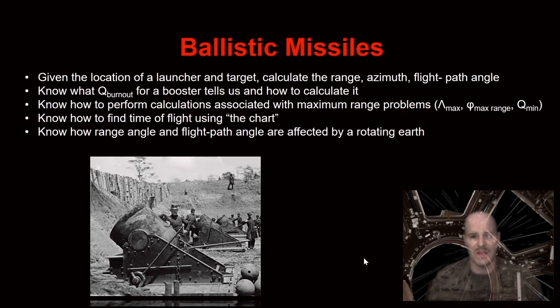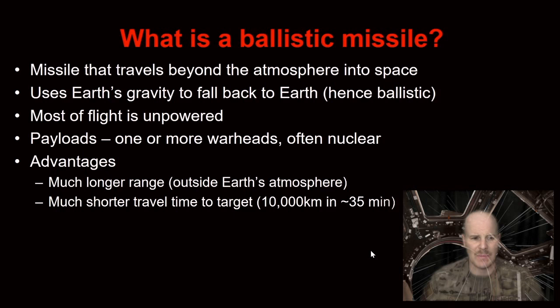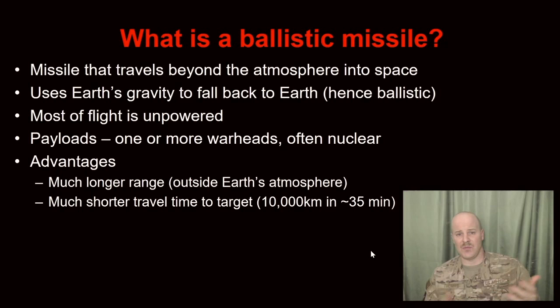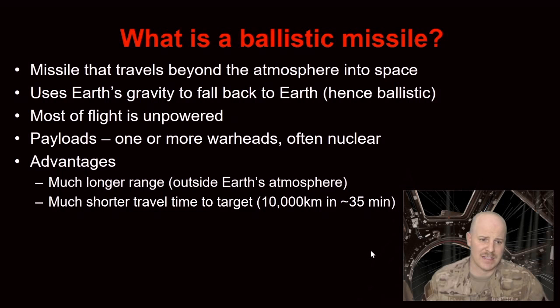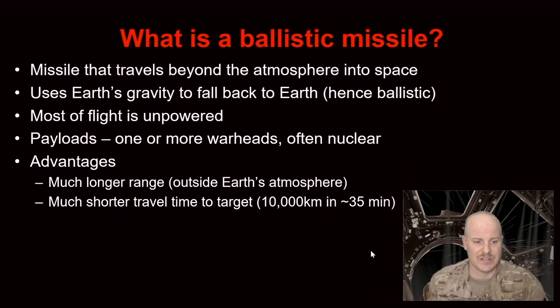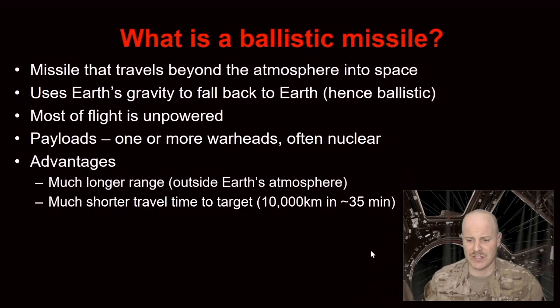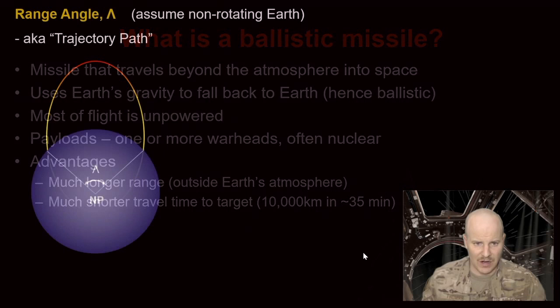You should also know how range angle and flight path angle are affected by a rotating earth. So to begin: what is a ballistic missile? It's a missile that travels beyond earth's atmosphere up into space, then uses earth's gravity to fall back in a ballistic fashion — most of its flight is unpowered. Unlike satellites, the payload is a warhead, most often nuclear. Ballistic missiles have much longer range and shorter travel time than conventional missiles — they can go continent to continent in about 30 minutes.